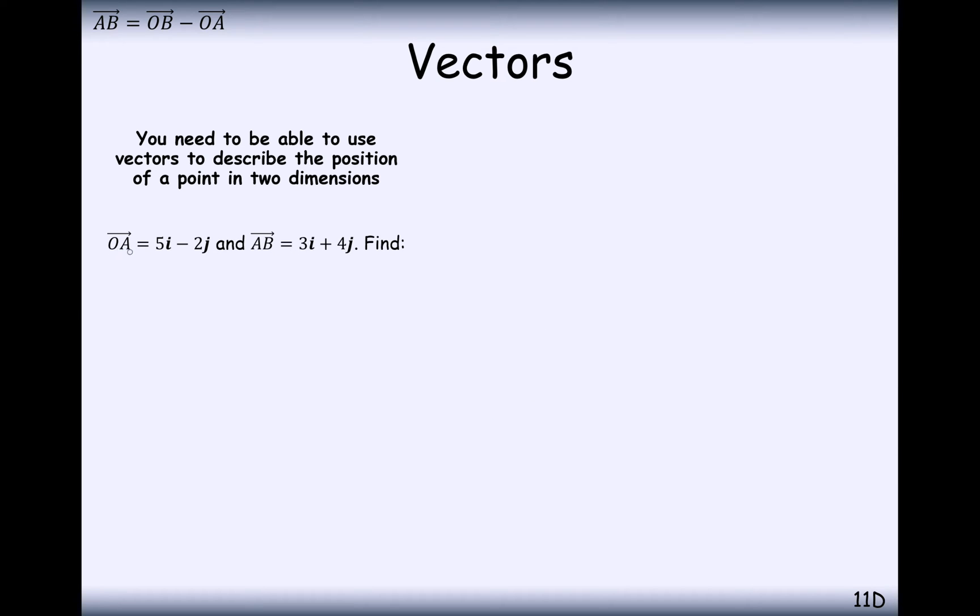A slightly difficult question then. OA is 5i minus 2j and AB this time is 3i plus 4j. Find the coordinate for B, find the exact length from O to B. The first thing I would do is perhaps draw a diagram to help me out.